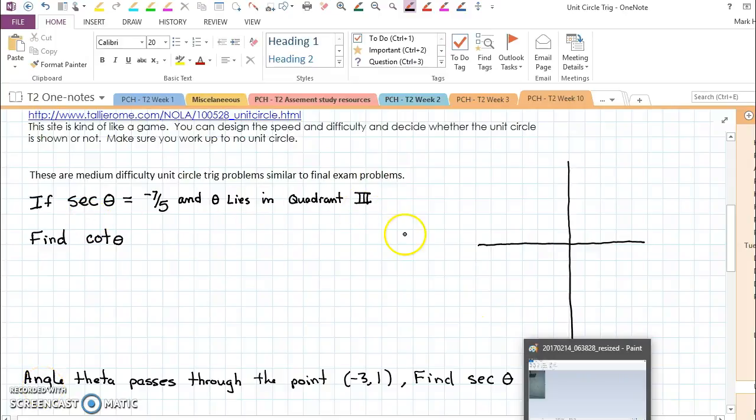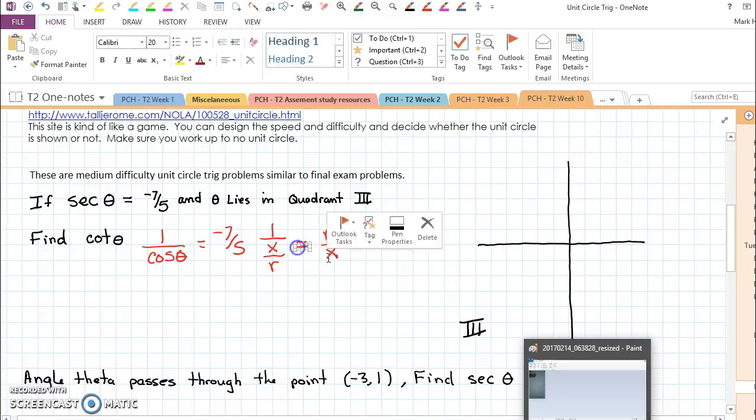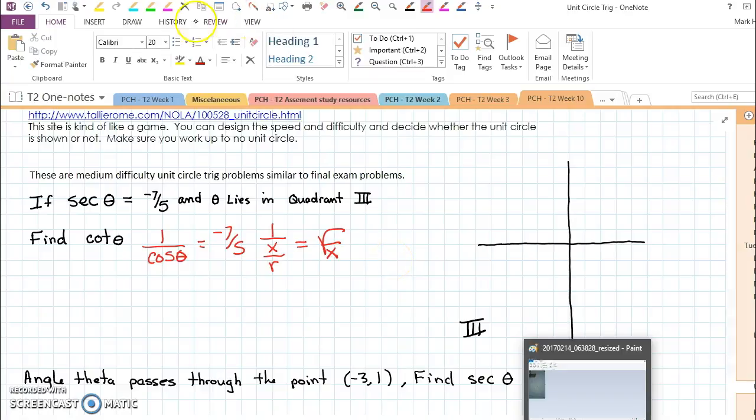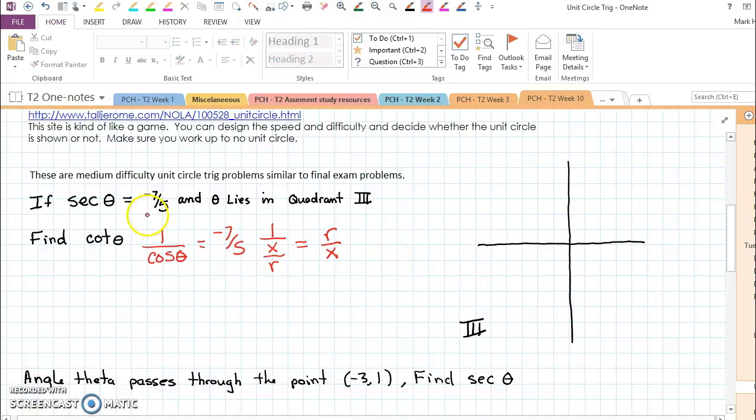You've been given quadrant 3, so we know we're dealing down here. You've been told secant, which is 1 over cosine, is negative 7 over 5. But cosine is also 1 over x on the unit circle, but off the unit circle it's x over r. And if we simplify that, we're really looking at r over x. And it should be clear to you that negative 7 over 5 is not on the unit circle.